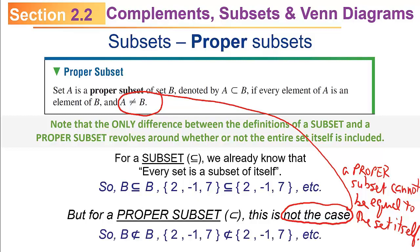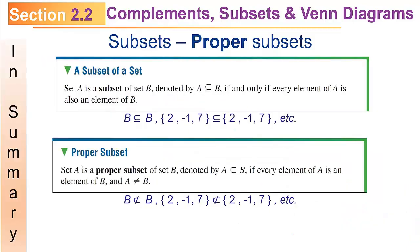So whereas I could say B is a subset of B, B is not a proper subset of B. And where I said {2, -1, 7} is a subset of {2, -1, 7}, I have to say {2, -1, 7} is not a proper subset of {2, -1, 7}. That's the only single difference — proper subsets do not allow equality.